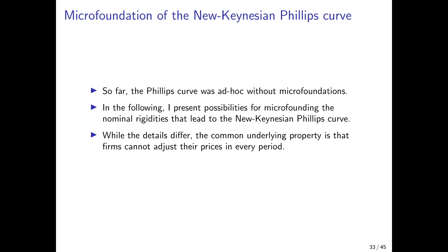Afterwards, we will focus on one of these possibilities — the model of Calvo, or Calvo pricing — which is a very simple way of introducing nominal rigidities. It works so well that it's adopted in many, many papers. While the details of the approaches differ, the common underlying property is that firms cannot adjust their prices in every period. This is kind of the common thread.